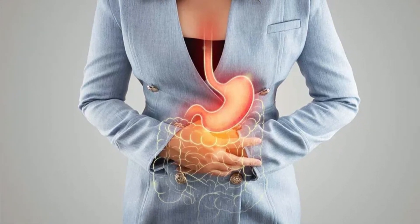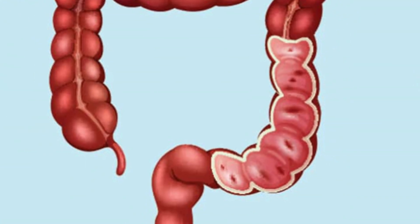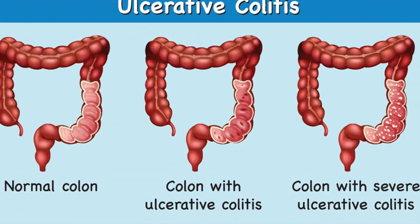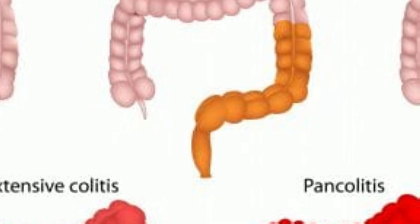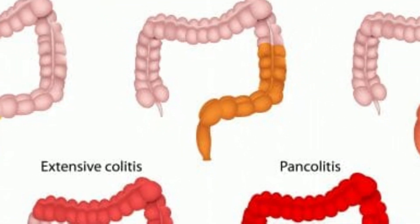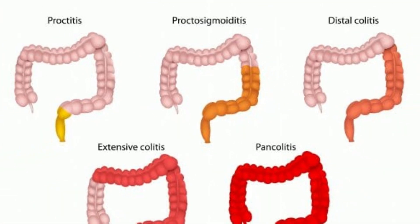Although it can strike at any age, ulcerative colitis often begins between the ages of 15 and 30, and less frequently between the ages of 50 and 70. It appears to run in families and equally affects both sexes.